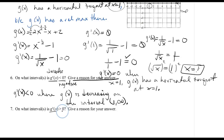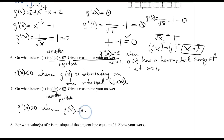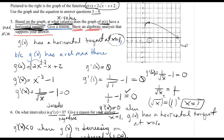Number 7 asks on what interval is g prime greater than 0 — where is the derivative positive? My derivative is positive where my function is increasing. Looking at the graph, the function is increasing from x equals 0 to x equals 1. Therefore, it's on the interval from 0 to 1.